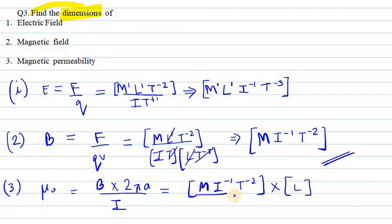Then we have I at the bottom, that is current. Current can be written as I only. So we are left with 1 here, so 1 when goes up it will be minus 1. So minus 1 minus 1 will become minus 2, so I raise to power minus 2, T raise to power minus 2, then we have in the end L.